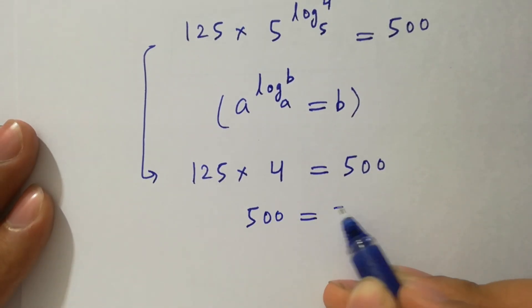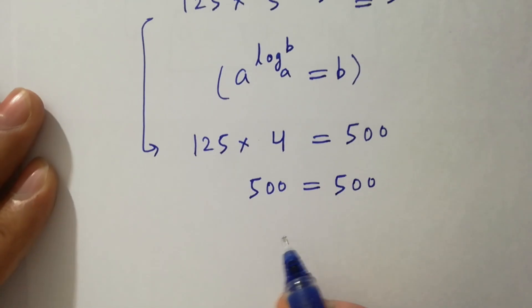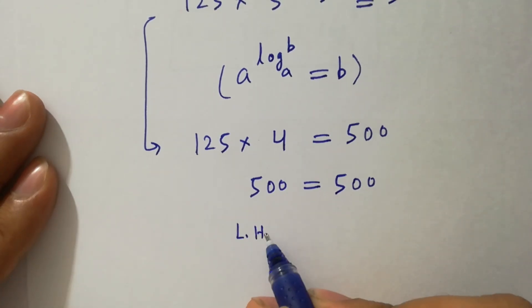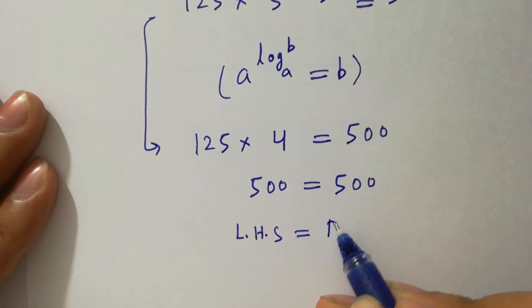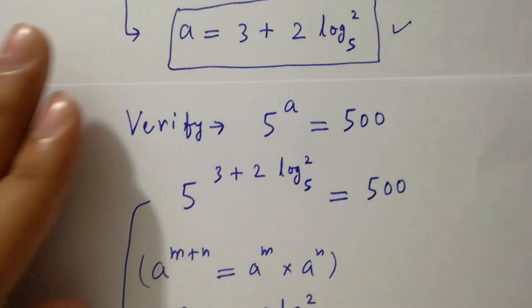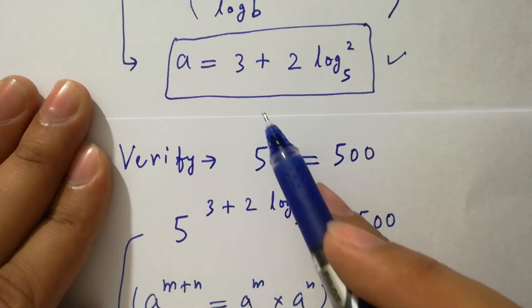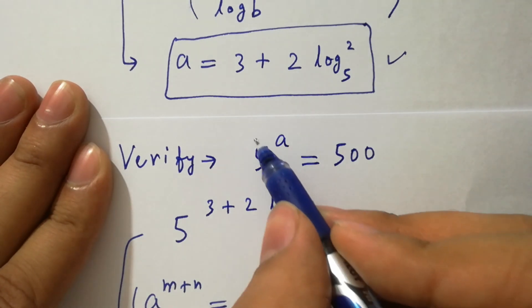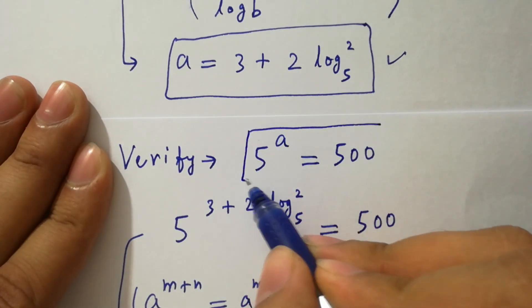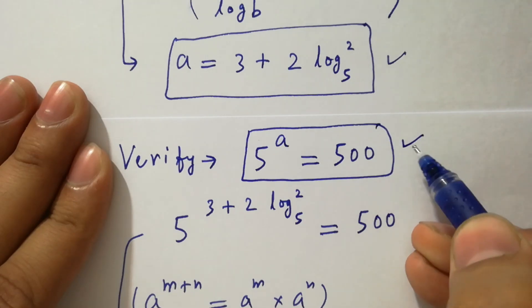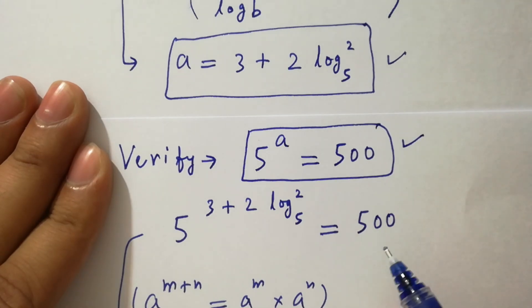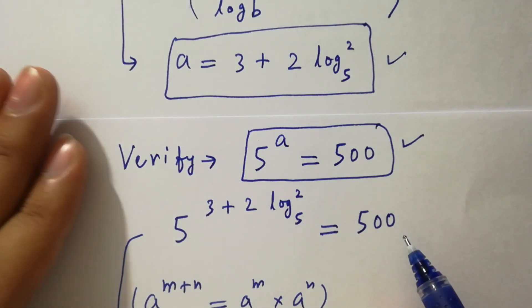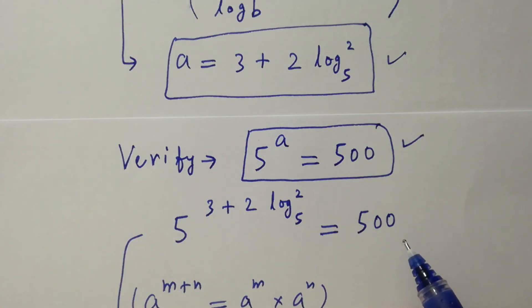125 times 4 is 500, equal to 500. Left hand side equals right hand side, which shows that the value of a equal to 3 plus 2 log 2 to the base 5 satisfies the equation 5 to the power a equals 500. Thanks for watching this video, please subscribe to this channel to get notifications of new videos.